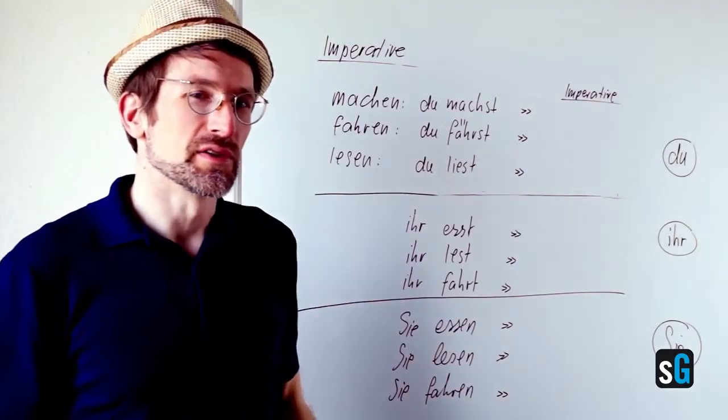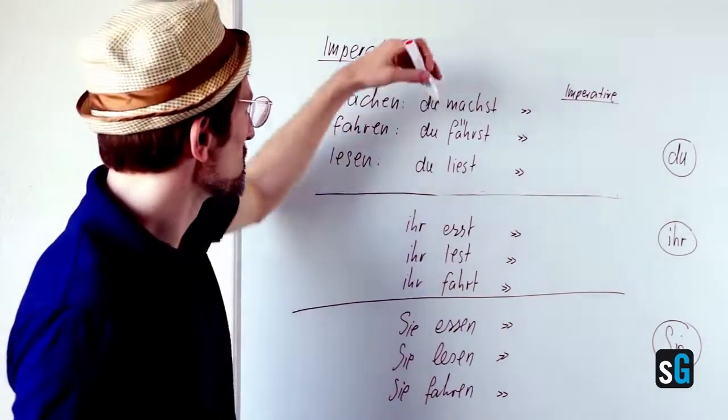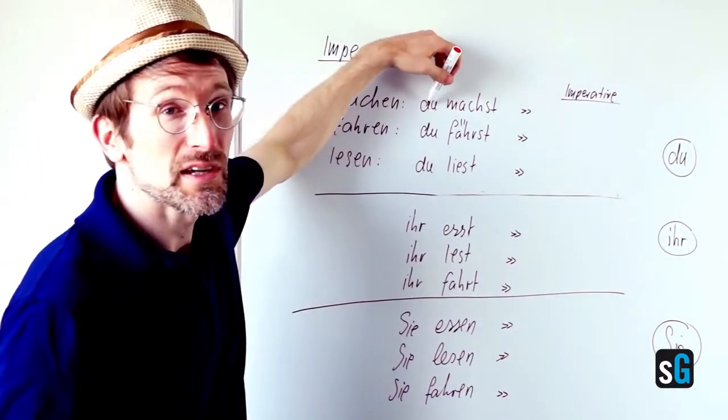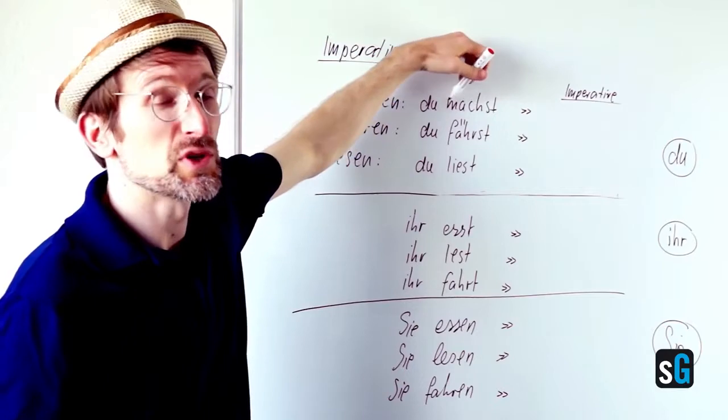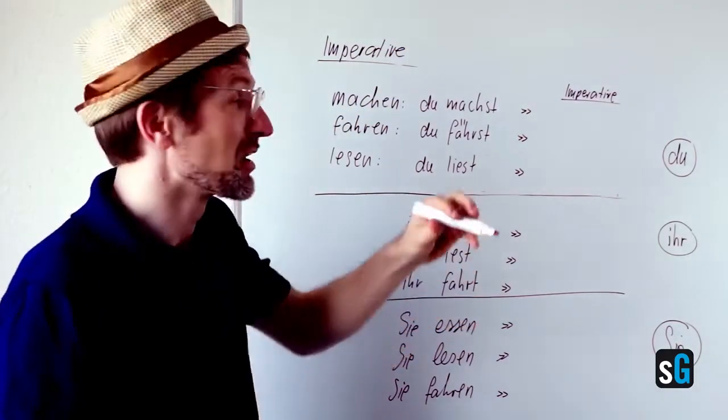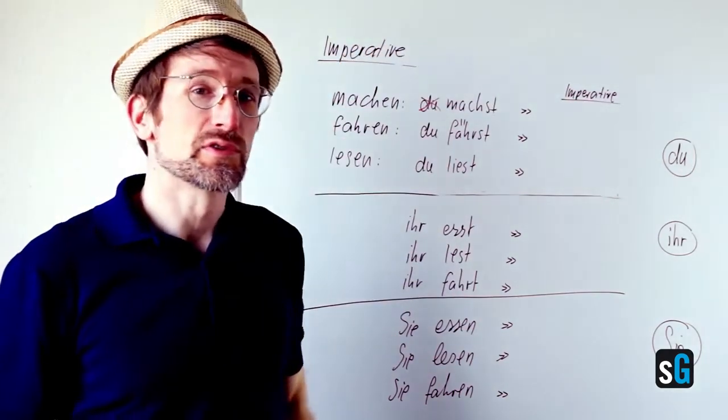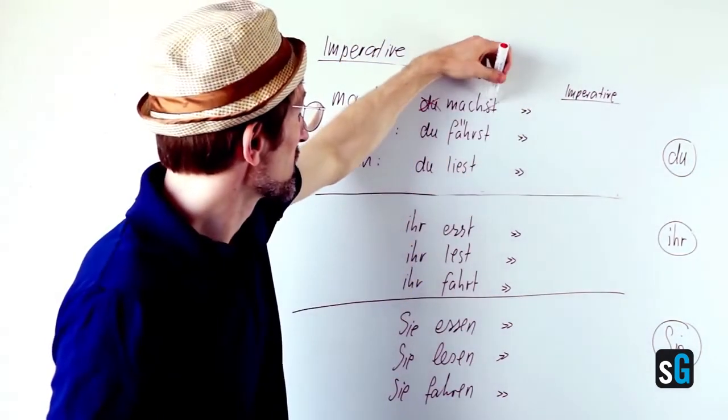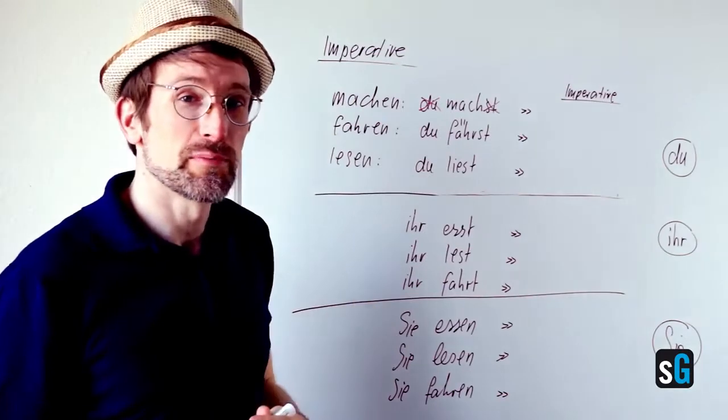It's very easy to create the imperative. Take a look. You just take the second person of the singular, which is the du form. It gets clear why in a minute. And you just eliminate the du and the ending. So you're left with the imperative.